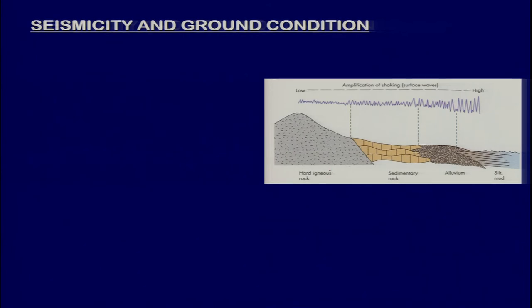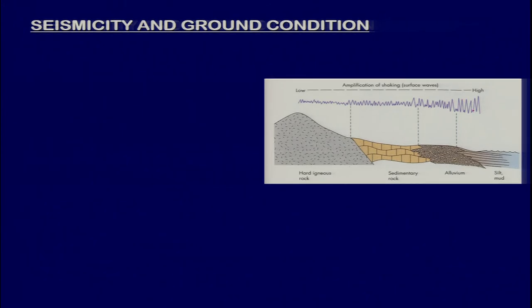If a particular magnitude earthquake is triggered in hard rock, you will have different amplification in sedimentary rocks, based on surface wave propagation. In alluvium — loose material — amplification will be slightly higher than in sedimentary rocks. But in very fine deposits like silt and mud, amplification will be very high. If you consider the Himalayas versus the Indo-Gangetic plain, one can understand that the plain area will be affected more because amplification is much higher, and ground shaking will be much greater compared to hard rock terrain.